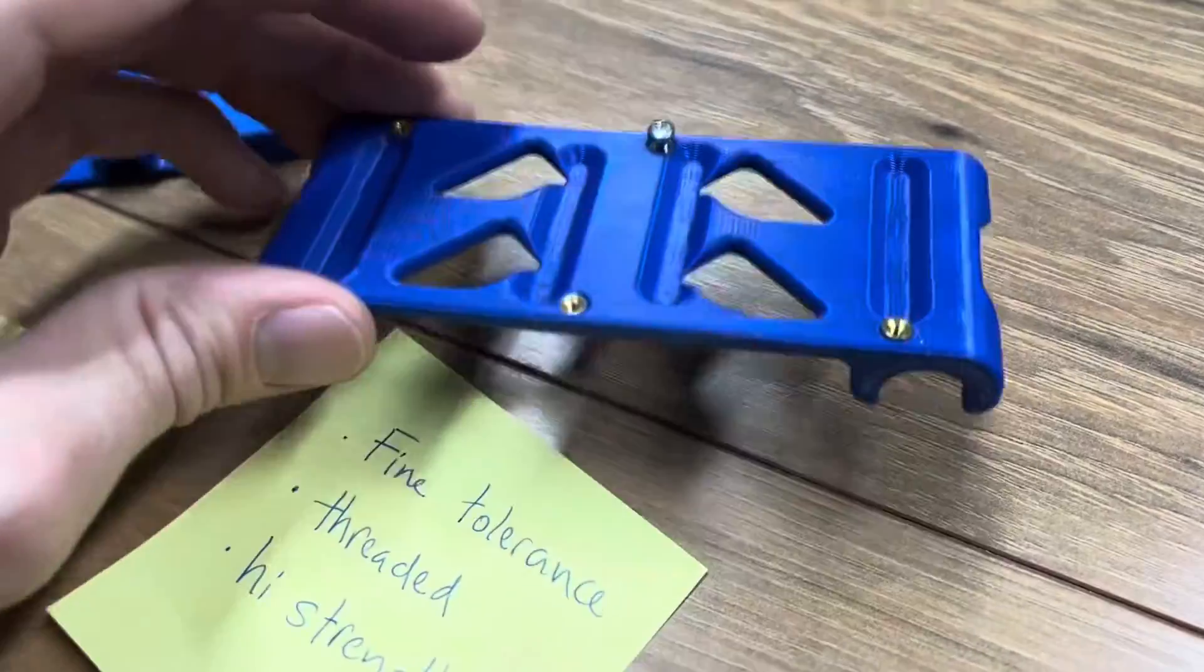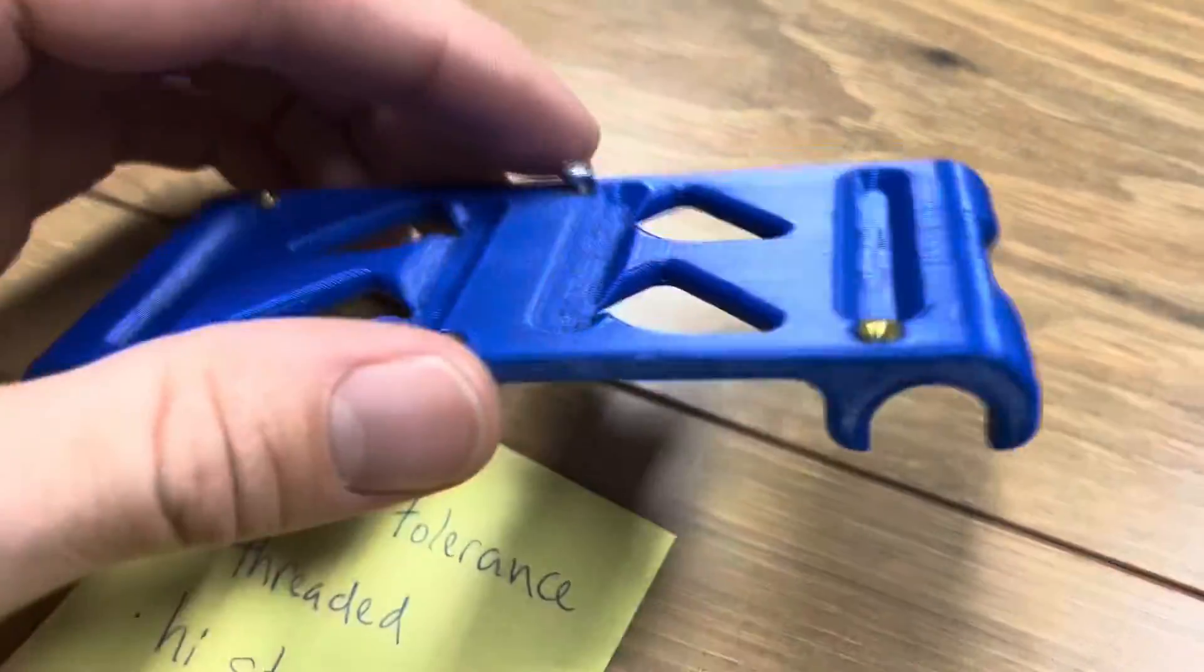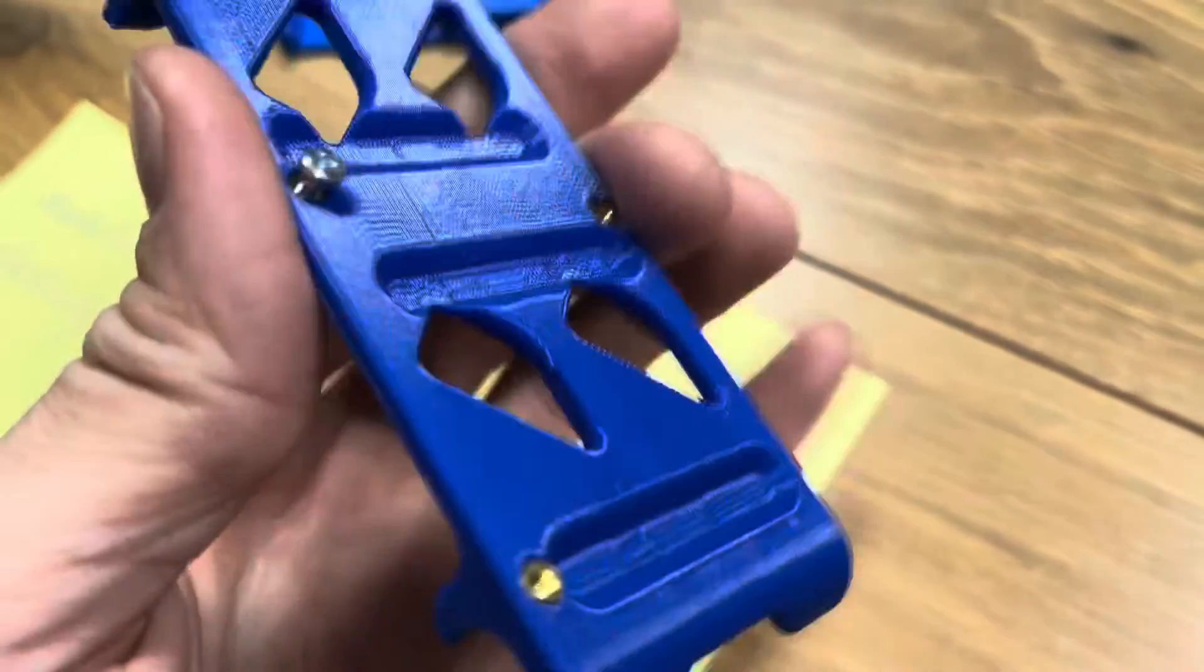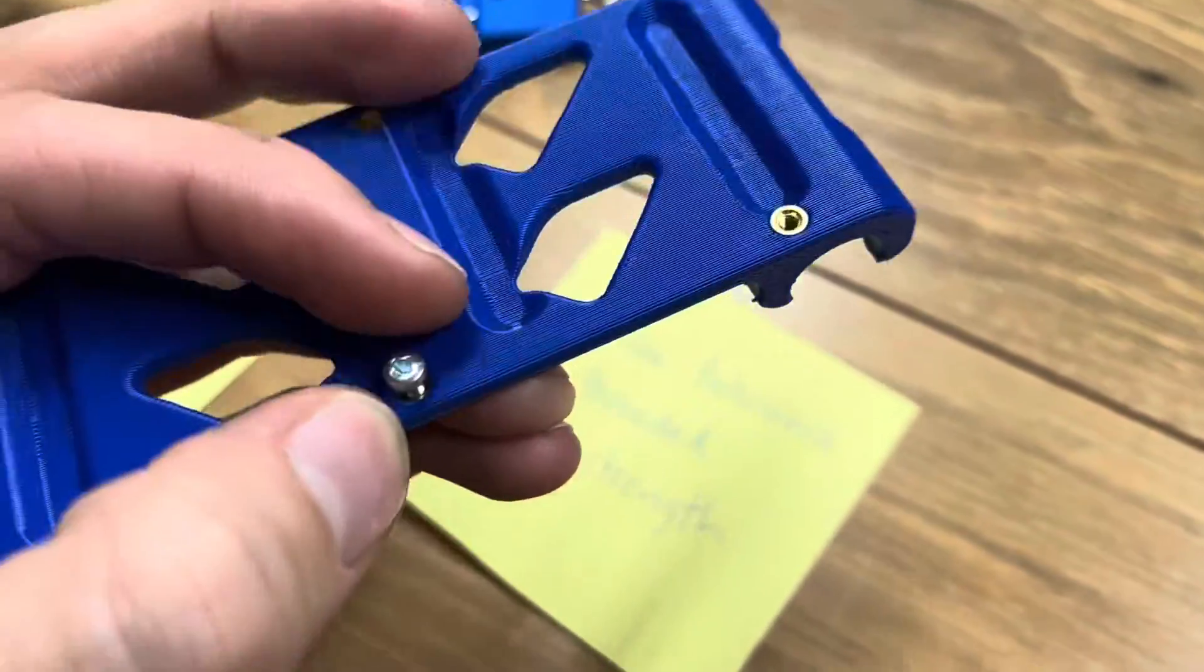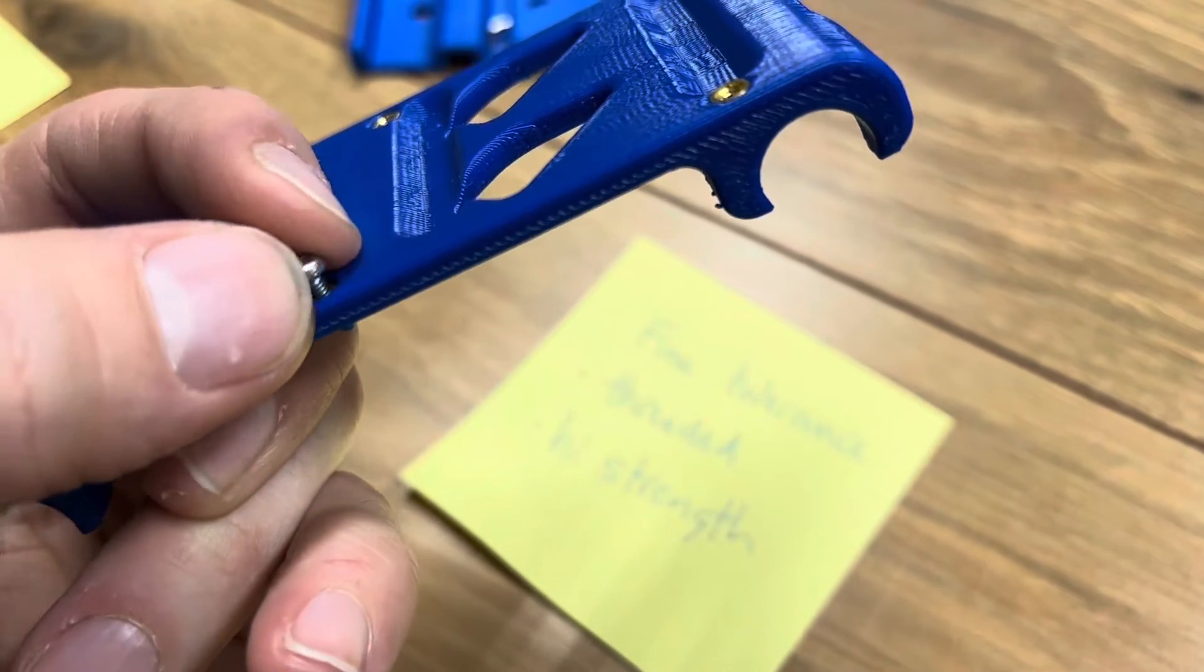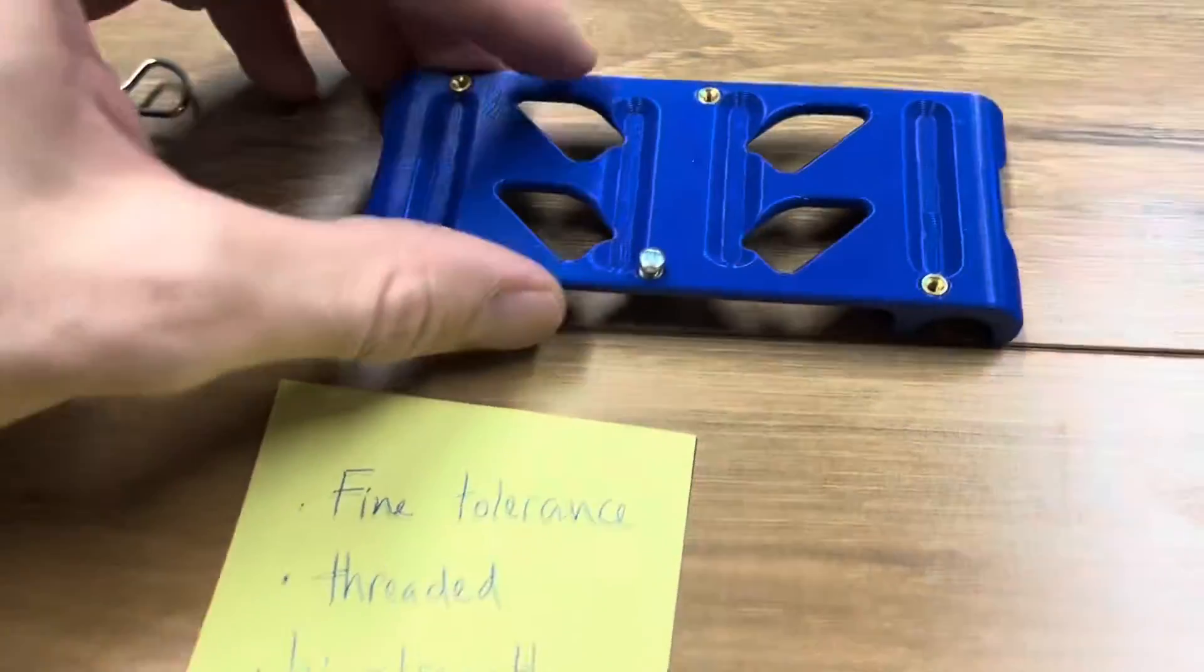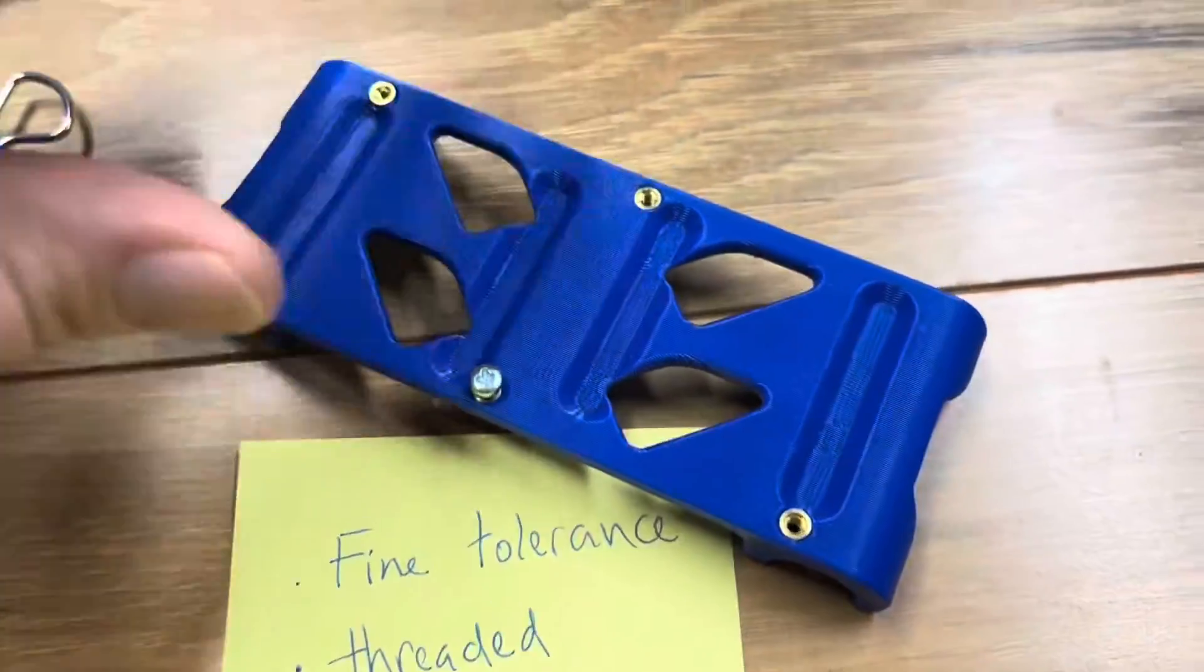This is what you do in a design: there's only going to be a couple of regions where you need the fine tolerance. In this case, I need the strength of the brass and I need the very fine tolerance geometry of the threads that I can thread in my screw. So I borrow those properties from the brass threaded inserts.